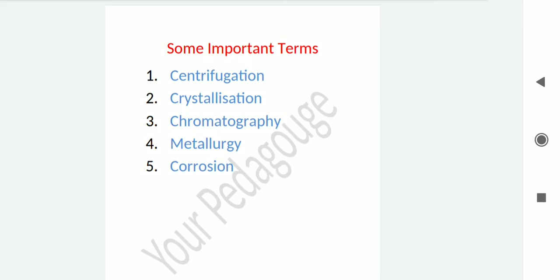Now let's talk about metallurgy. The process of obtaining a pure metal from its ore is called metallurgy, and the various steps involved in the extraction of metal are called metallurgical operations. Corrosion is the wasting away of metals layer by layer due to the formation of metal compounds on the surface. Examples include rusting of iron, formation of a green layer over copper, and tarnishing of silver.